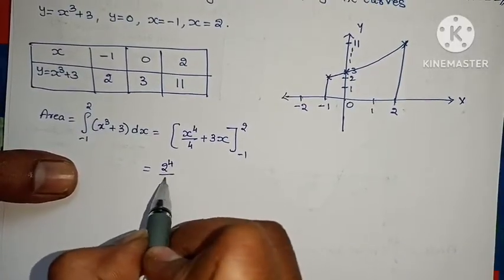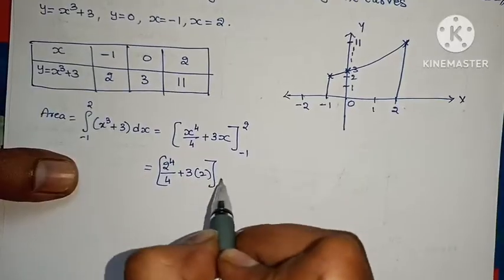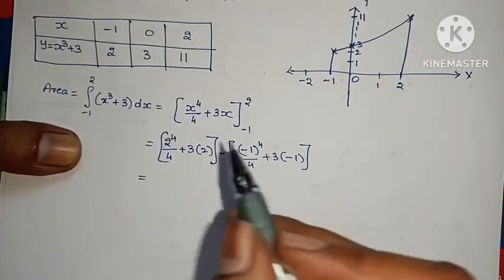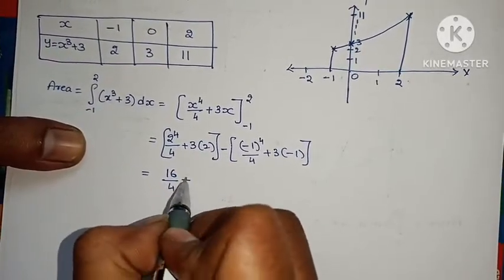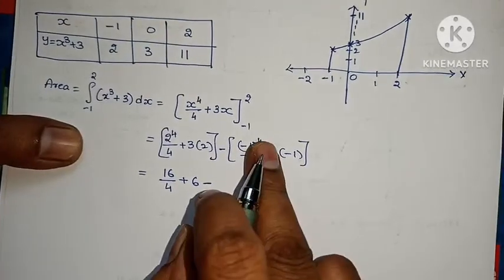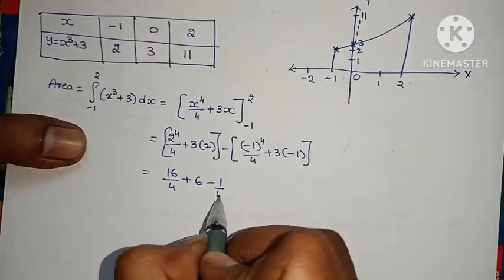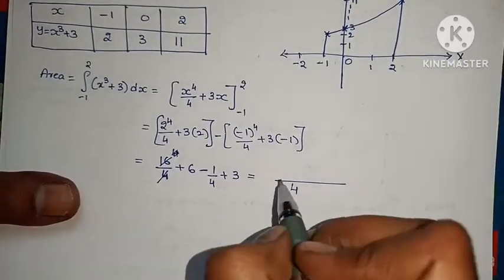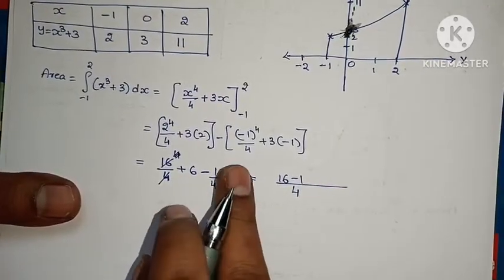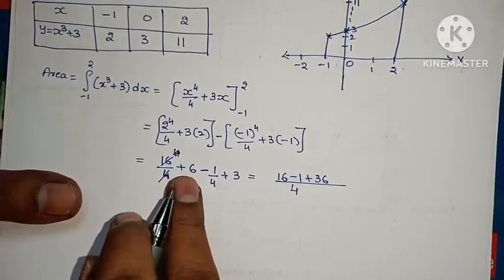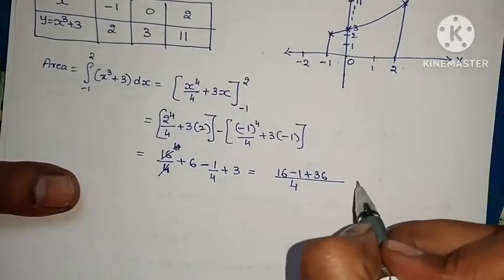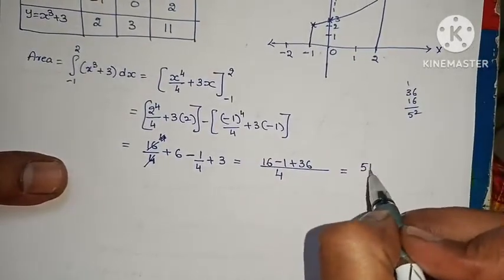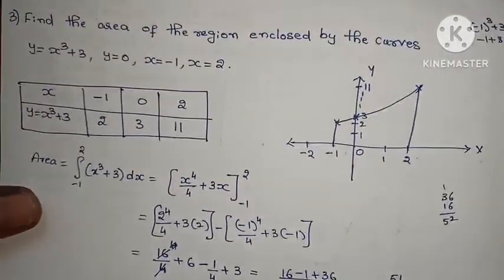Apply upper limit: 2⁴/4 + 3(2) = 16/4 + 6 = 4 + 6 = 10. Minus lower limit: (−1)⁴/4 + 3(−1) = 1/4 − 3. So 10 − (1/4 − 3) = 10 − 1/4 + 3 = 13 − 1/4. LCM gives 52/4 − 1/4 = 51/4. That is the answer.